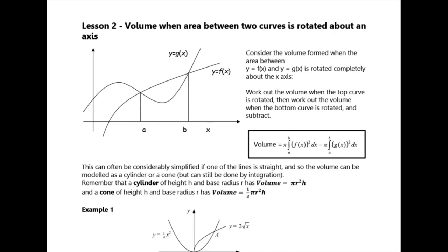Last lesson we looked at finding the volume of an area rotated around either the x-axis or the y-axis. We gave you a formula for that. If you're rotating around the x-axis, the formula is pi times the integral of y squared dx. Similarly, if you're rotating around the y-axis, it's x squared dy. The dx or dy tells you what axis you're rotating around.